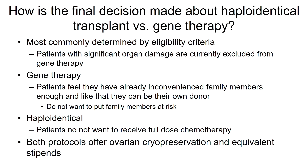How is the final decision made? Our recruitment coordinator noted that most commonly the decision is based on eligibility criteria: patients with significant organ damage are currently excluded from gene therapy and referred for haploidentical transplant. The next most common reason patients choose gene therapy is that they feel they've already inconvenienced their family members enough and prefer to be their own donor, not wanting to put family members at risk. Patients choose haploidentical transplant because they do not want to receive full-dose chemotherapy. Both protocols offer ovarian cryopreservation and equivalent stipend, so those factors don't drive the decision.